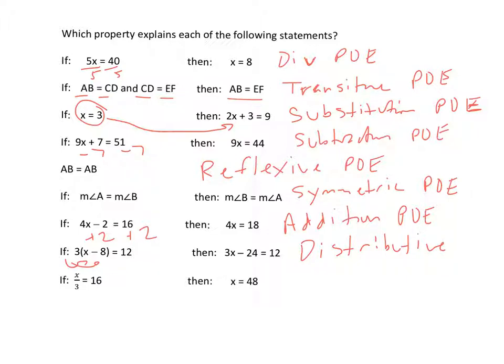And then if x over 3 equals 16, then x equals 48. We did that by multiplying by 3 on each side. So this is the multiplication property of equality.